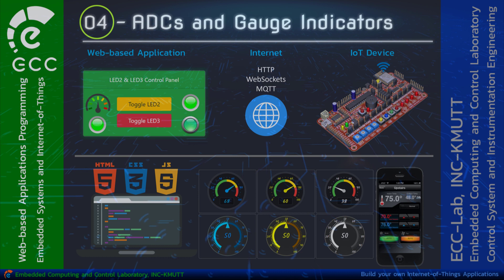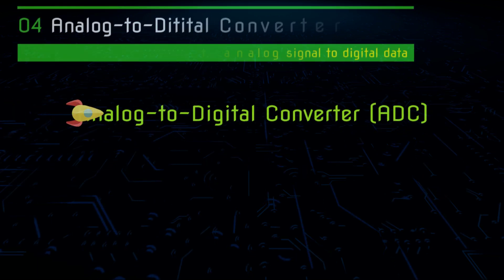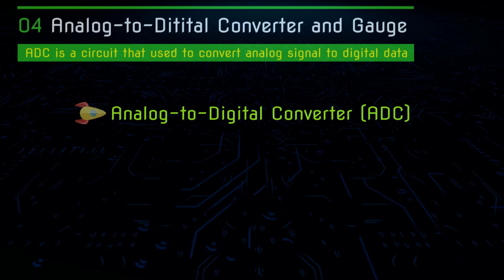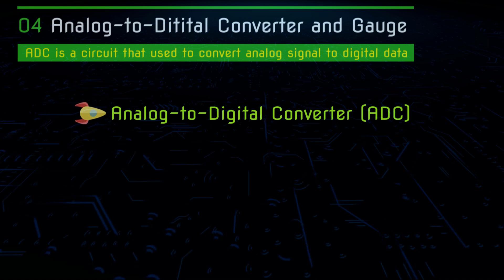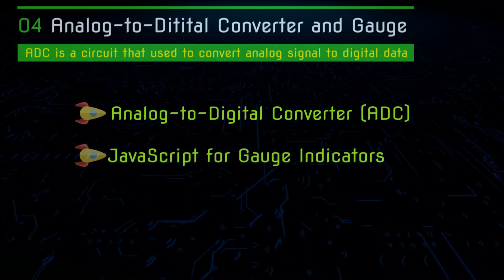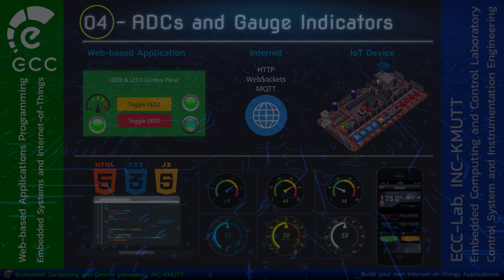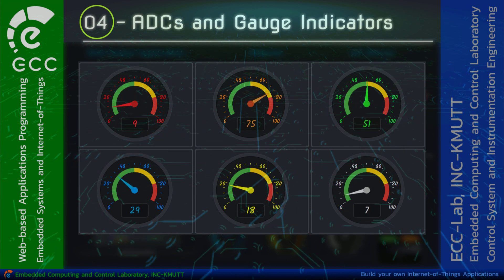Welcome to the fourth video of the web-based application programming for the IoT applications. In this video, I will be talking about the Analog to Digital Converter, or ADC. The ADC is used in most microcontroller systems and digital control systems. After that, we will learn how to write programs in JavaScript to get sensor data from the ADCs of the microcontroller and display them in the web browser using the gauge or meter component.